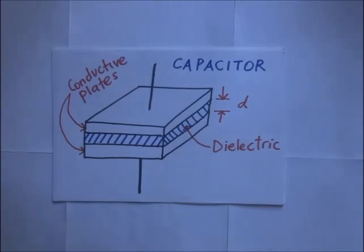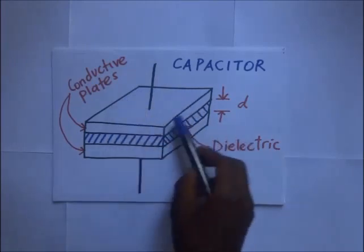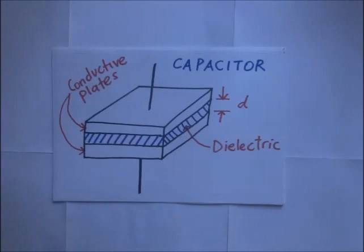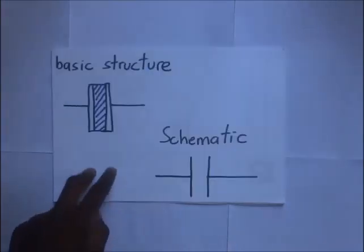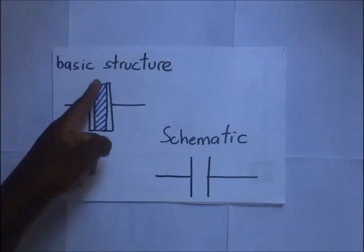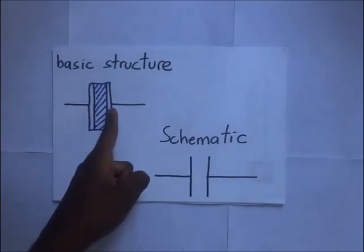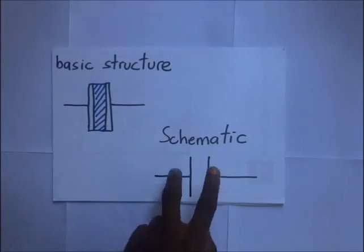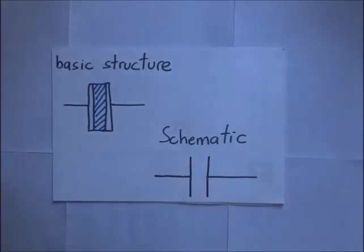The dielectric material can either be air, paper, or even oil. The metal plates can be square, circular, rectangular, or even cylindrical, all depending on the application and the voltage rating. This is the cross-sectional view of the basic structure of the capacitor showing the dielectric and the two plates, and this is the schematic symbol used when drawing it in an electric circuit.